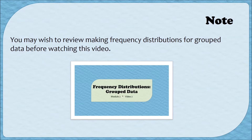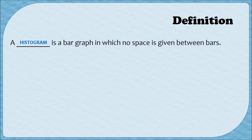In order to make a histogram, we do need to be able to make a frequency distribution. You may wish to review Video 2 of this module, Frequency Distributions for Grouped Data, before you continue. Recall that a histogram is a bar graph in which no space is given between bars. Our histogram for grouped data is going to be pretty much the same as for ungrouped data — same big idea, but with one or two small adjustments since our classes are intervals instead of individual numbers.